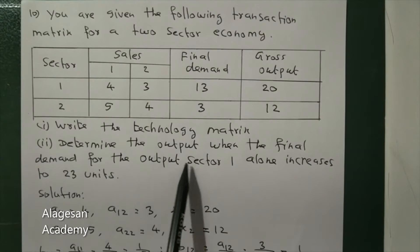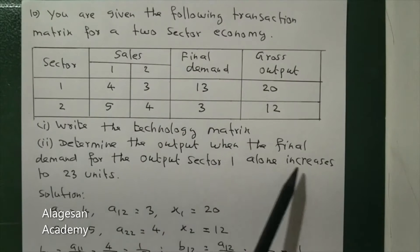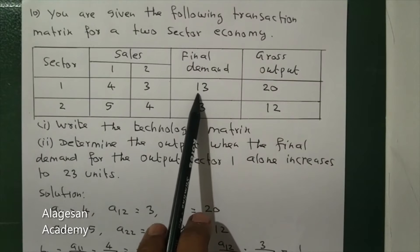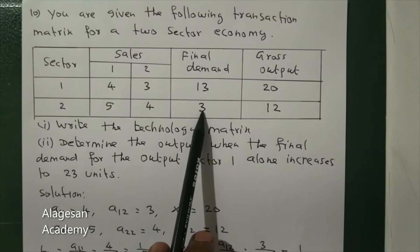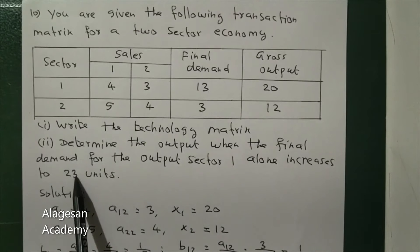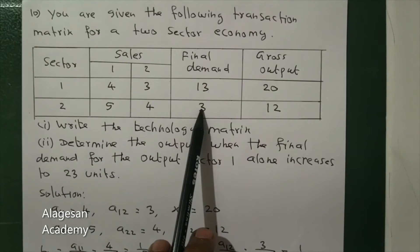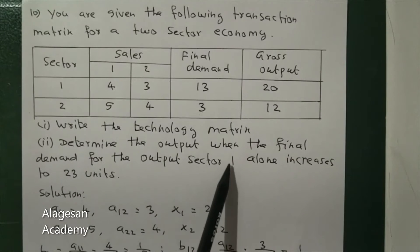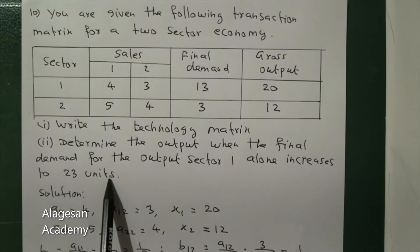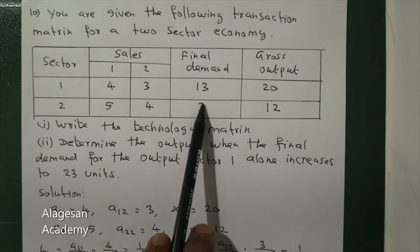The final demand of sector one increases to 23 units. The final demand of sector two remains the same — that is 3. So the D matrix will be 23 and 3. Only sector one's final demand changes from 13 to 23; sector two remains unchanged.